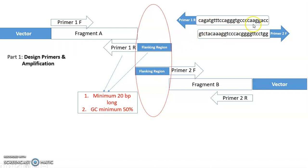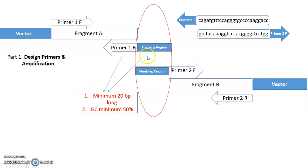For better understanding, here is how the flanking regions look. For Primer 1R, you see this kind of sequence, and for Primer 2F, this kind of sequence in the flanking region. If you look very carefully, you can see these parts are complementary — C, G, C, G, A, T, G, C, G, C. So when they come together and using a ligase enzyme, they will join with each other and make a single fragment.